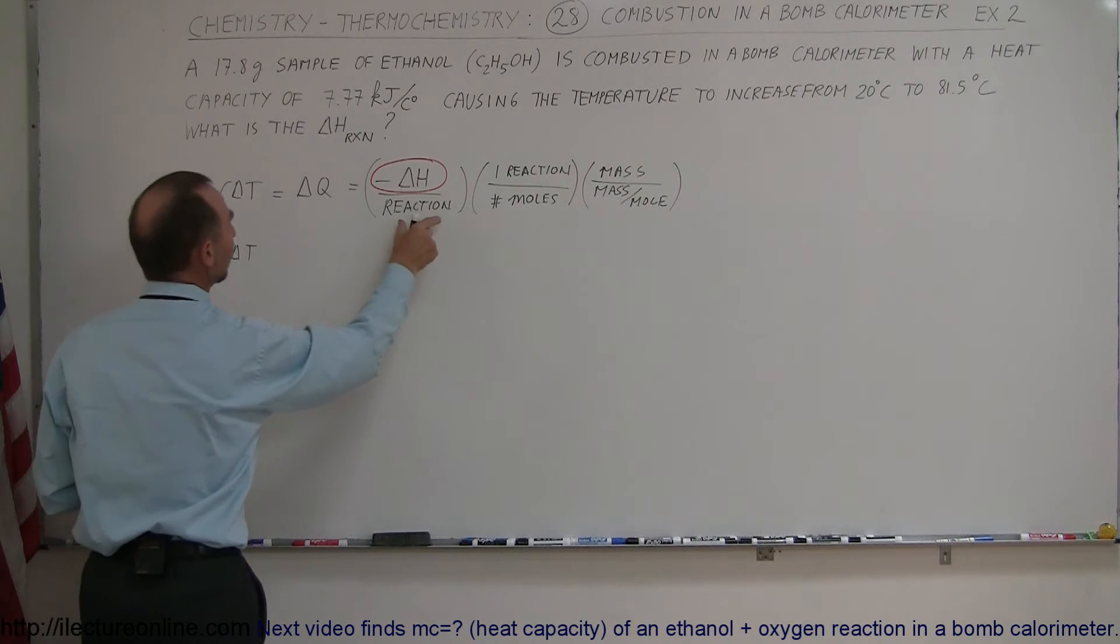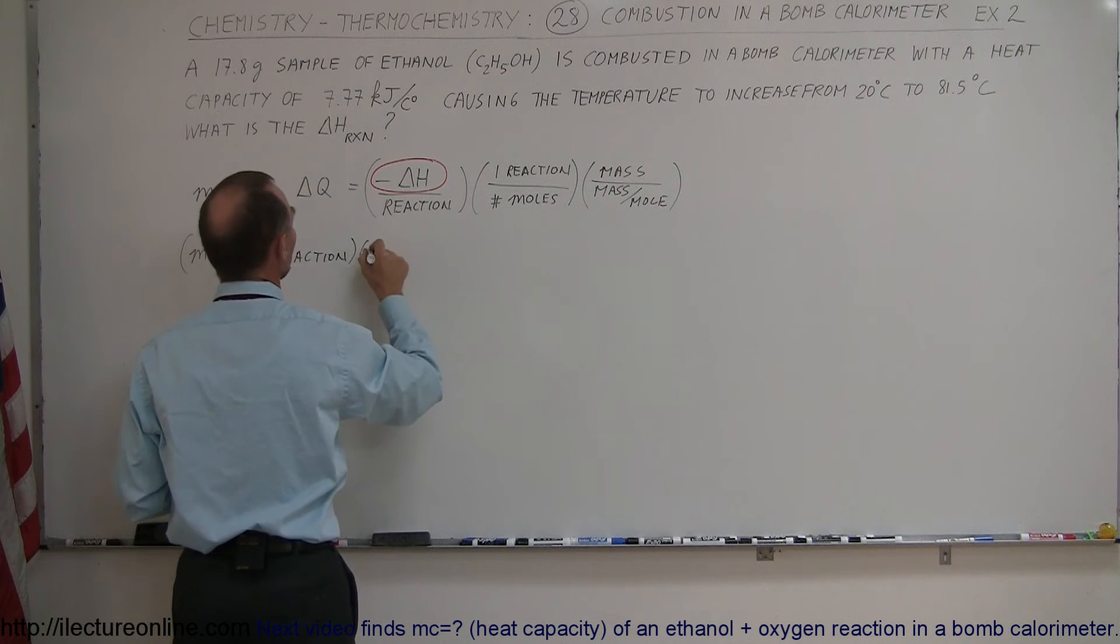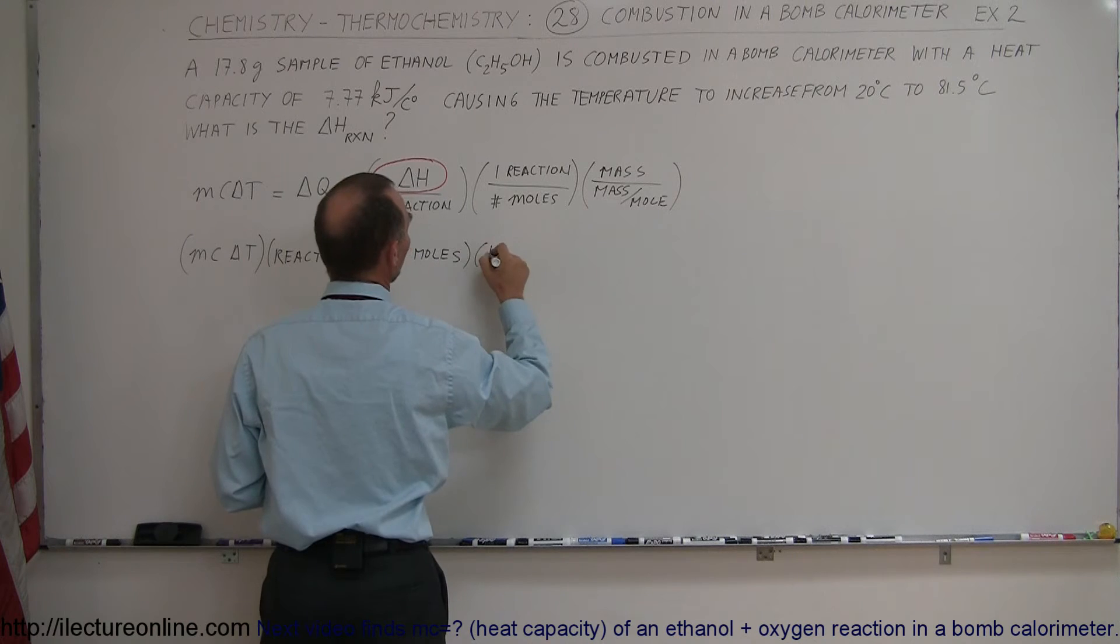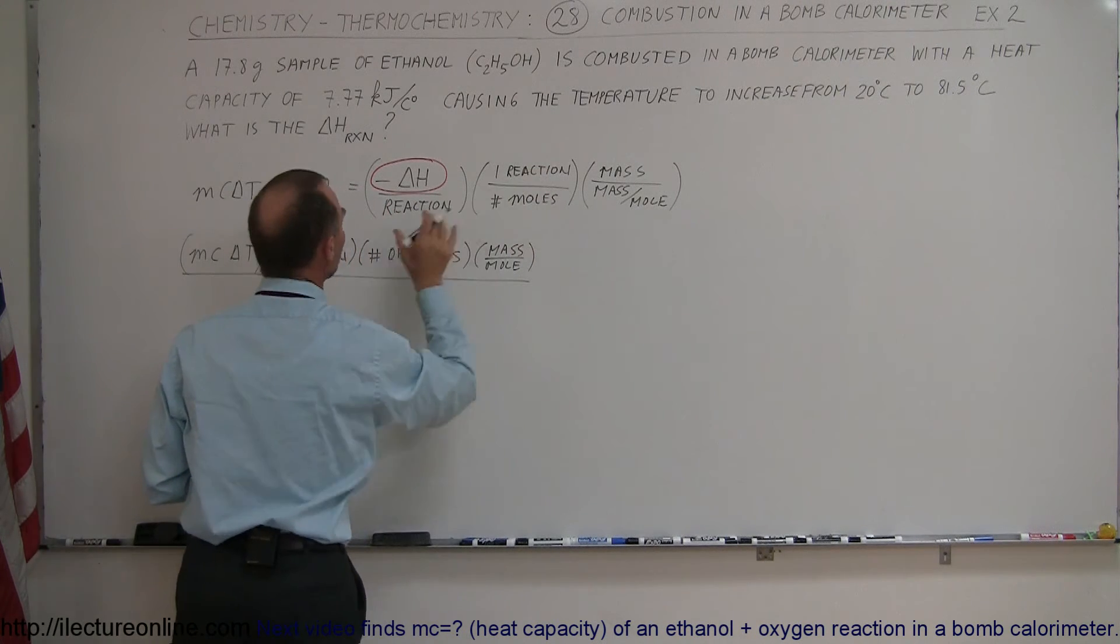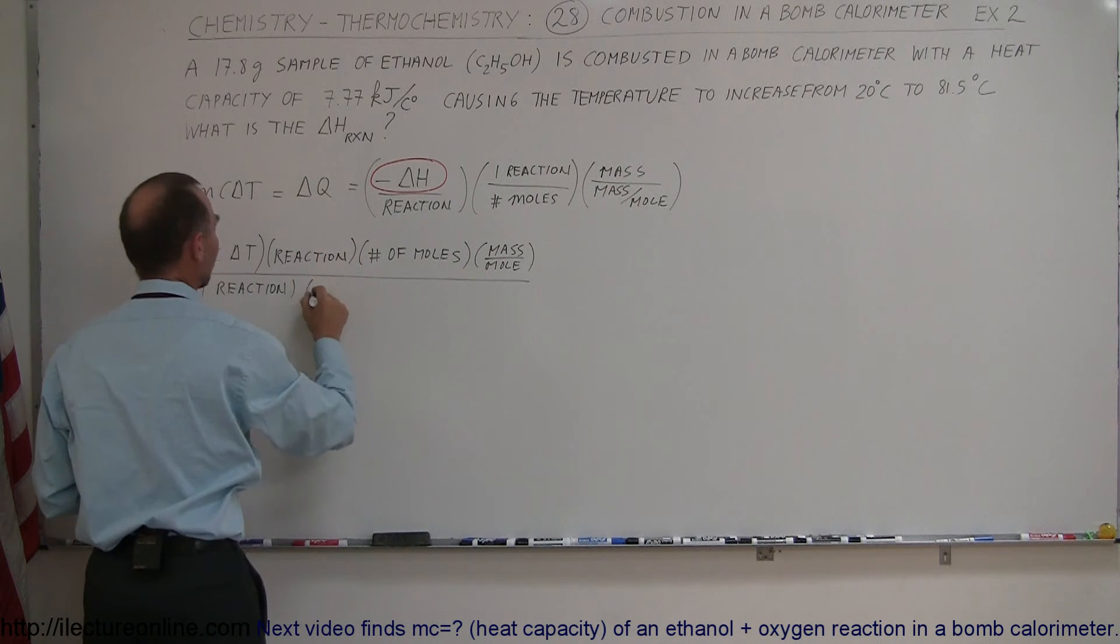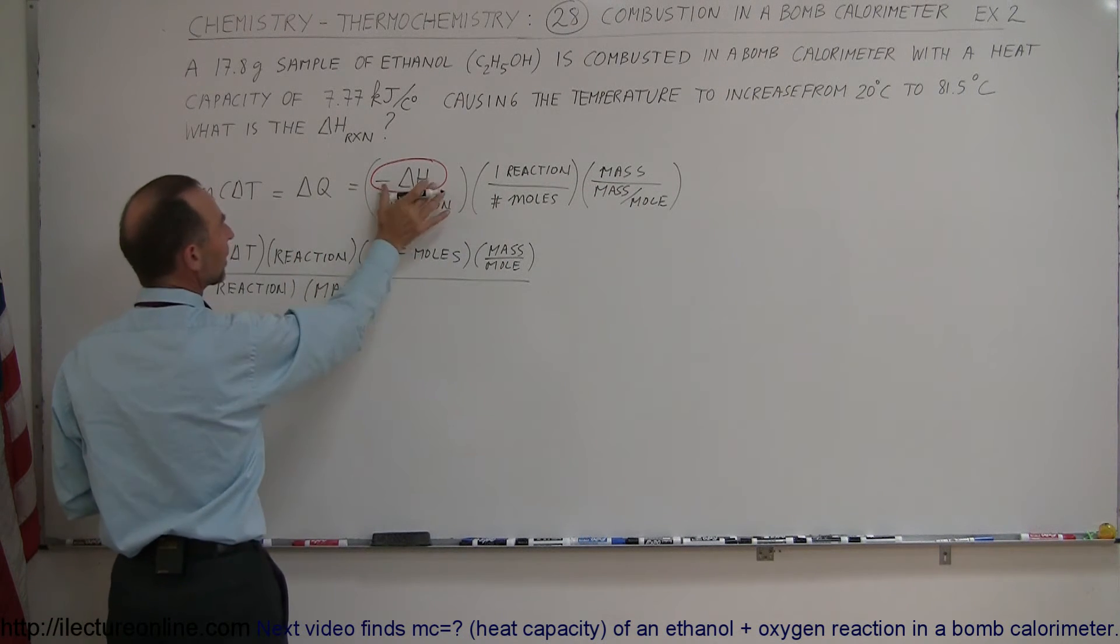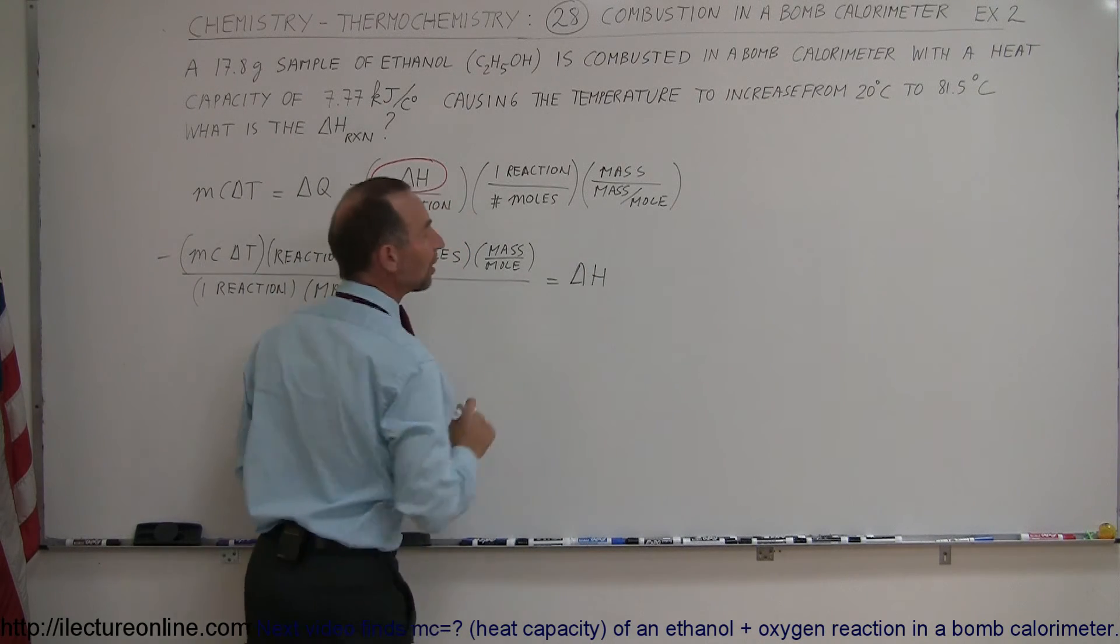Remember that the MC portion of this is equal to the heat capacity of the calorimeter. So now we take the reaction, put it up here, times the reaction, times the number of moles, and times the mass per mole, and divide the whole thing by one reaction and the mass of the sample. We're going to take a negative and move it over here so that this number becomes a positive delta H.